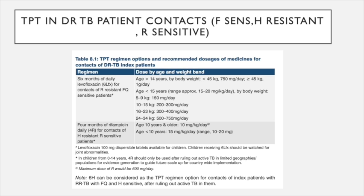Regarding preventive therapy for drug-resistant TB patient contacts: if a patient has drug-resistant TB and his contacts include household members, if the index case is INH resistant, two regimens can be followed. One regimen is six months of daily levofloxacin for contacts of rifampicin-resistant, fluoroquinolone-sensitive cases. For those who are rifampicin-sensitive but INH-resistant, four months of rifampicin can be given at a dose of 10-15 mg per kg per day, following weight-band dosing.